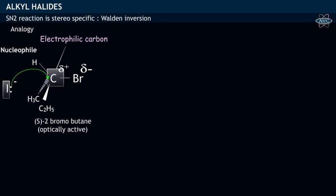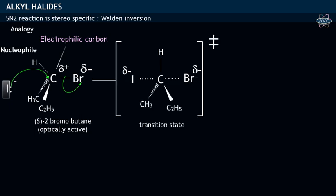This is followed by C–Br bond electron transfer towards bromine, thereby resulting in the formation of a transition state.